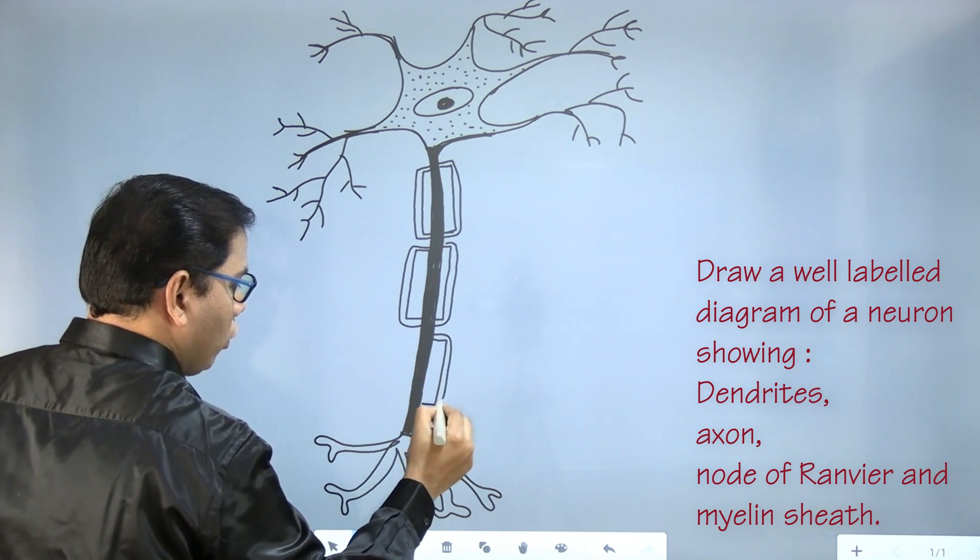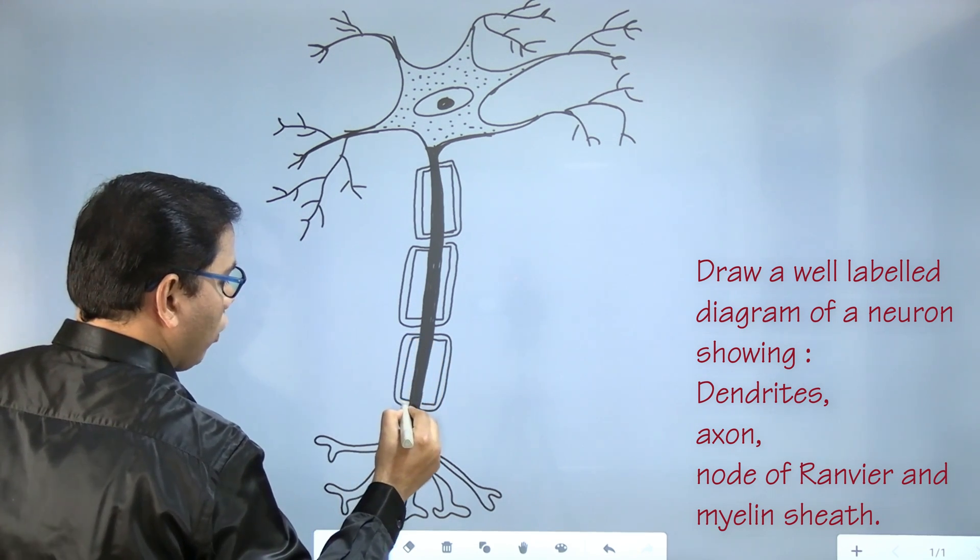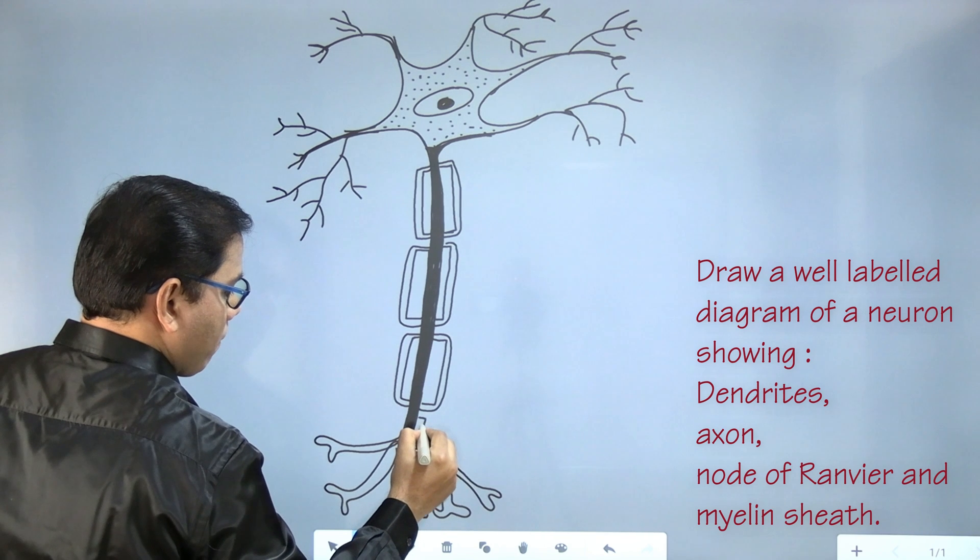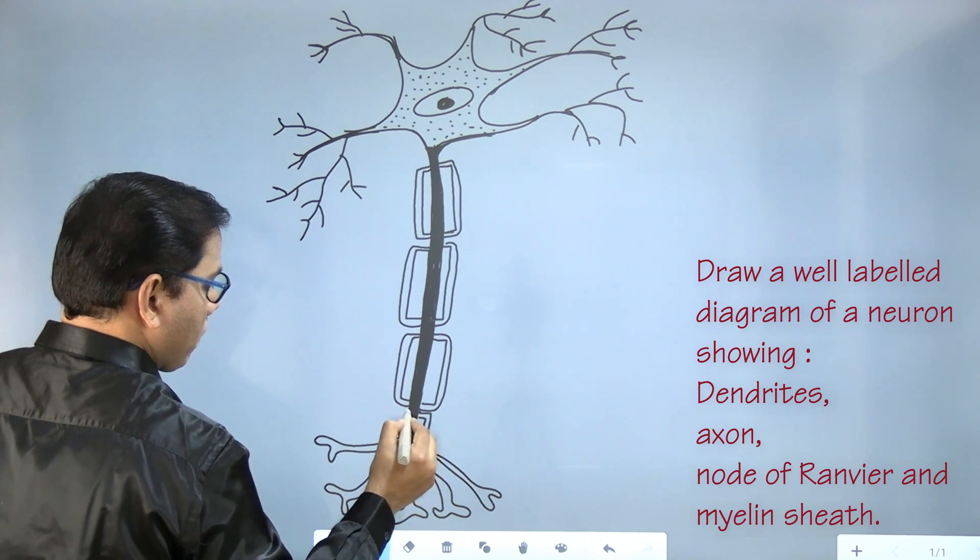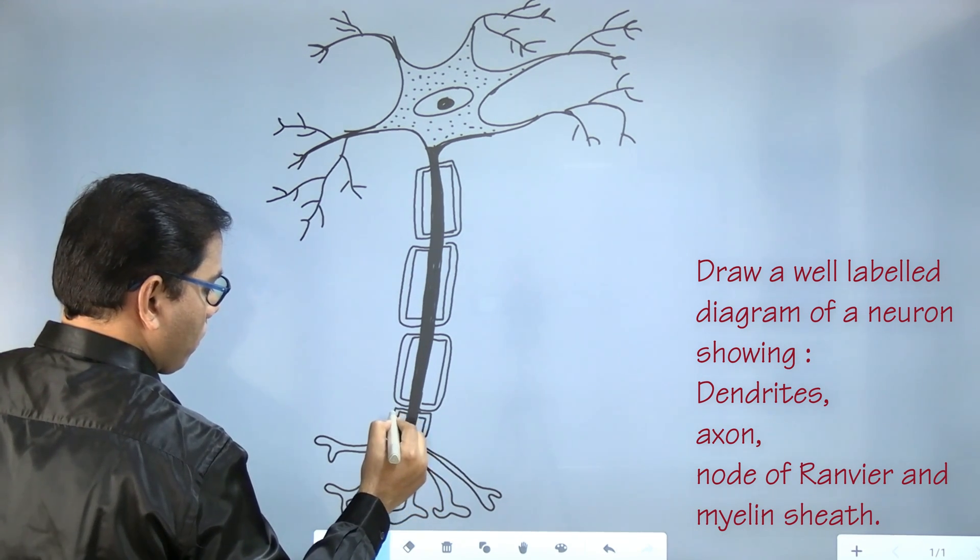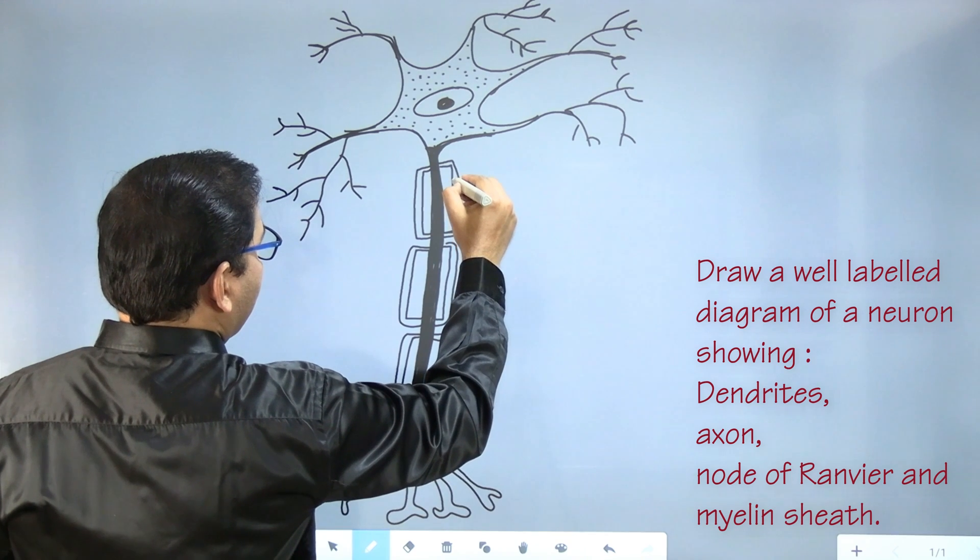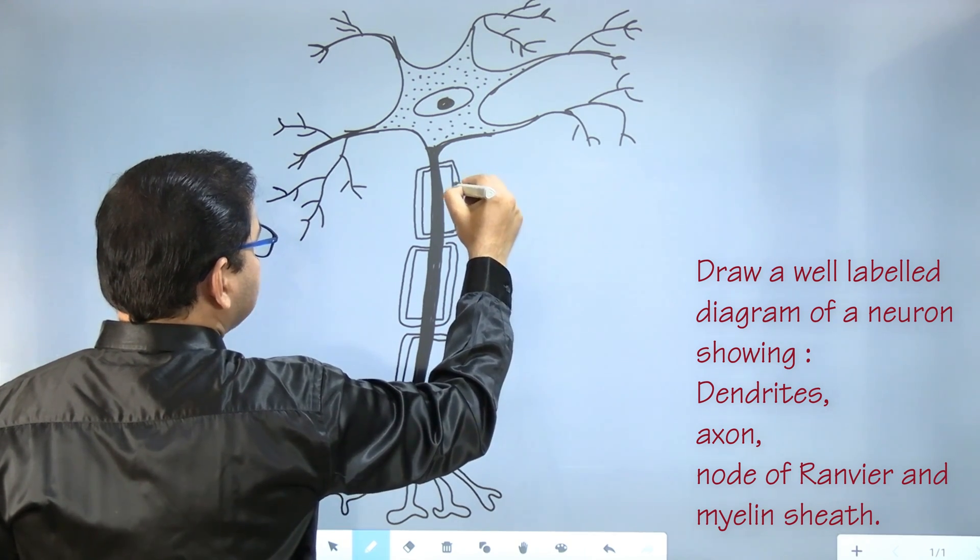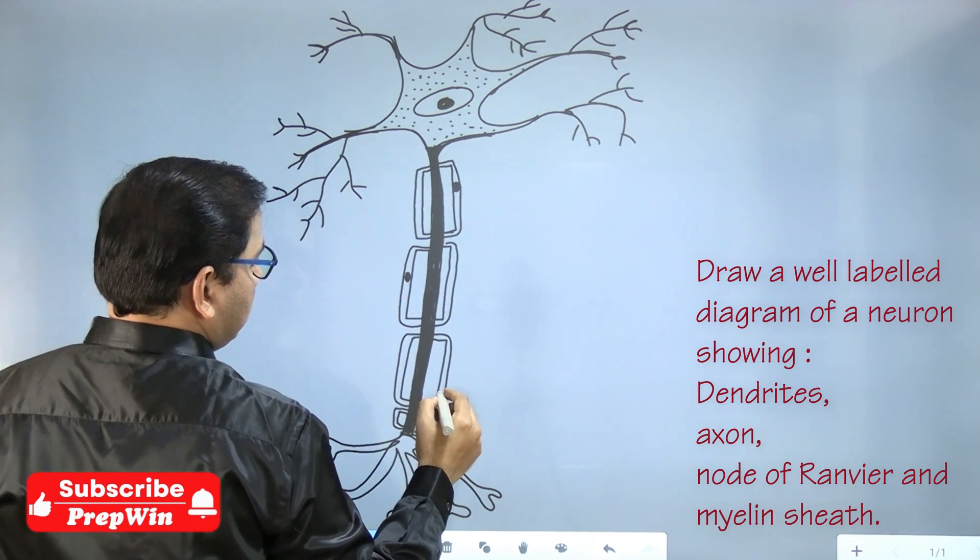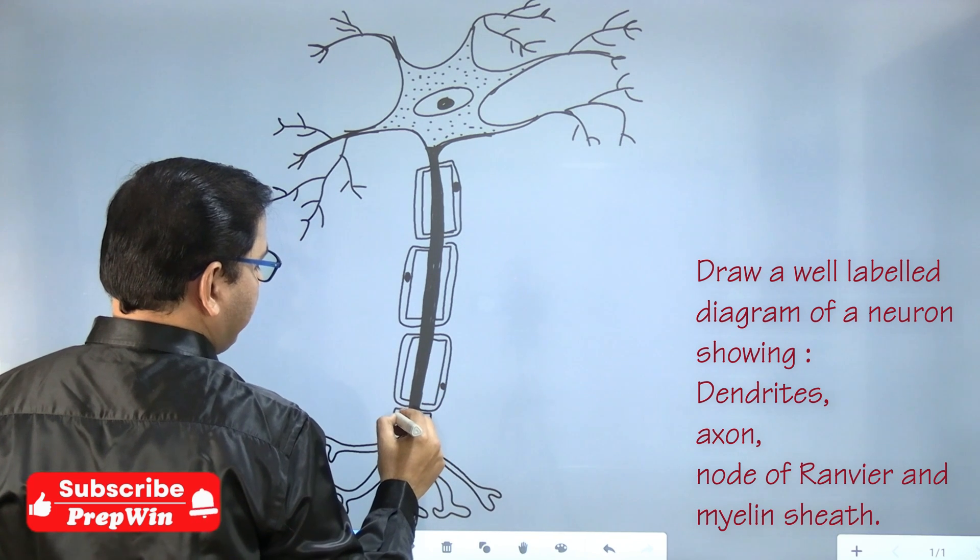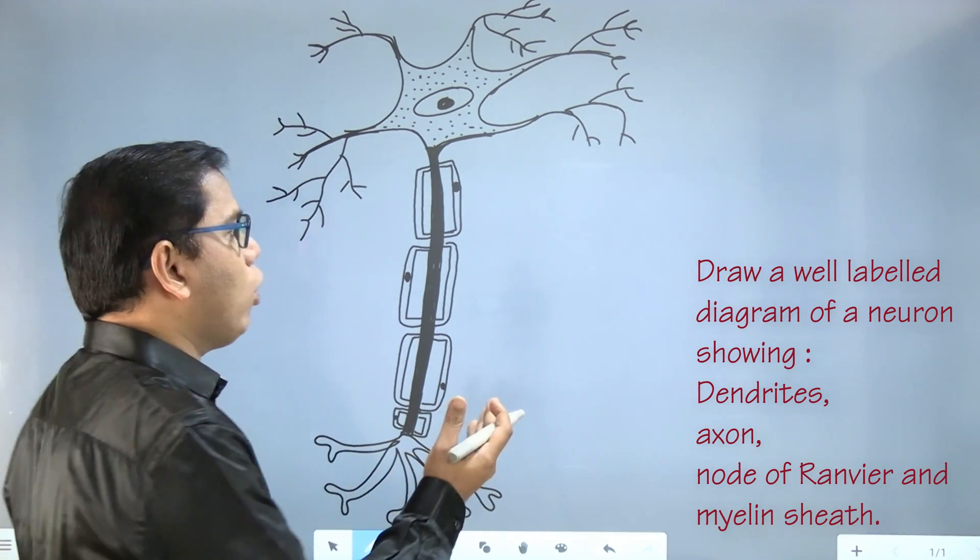Inner layer followed by the outer layer. Inner layer followed by the outer layer. And we will draw a cell called Schwann cell. One on the right-hand side, other one on the left-hand side, then again on the right-hand side and somewhere here on the left-hand side. So very easy.